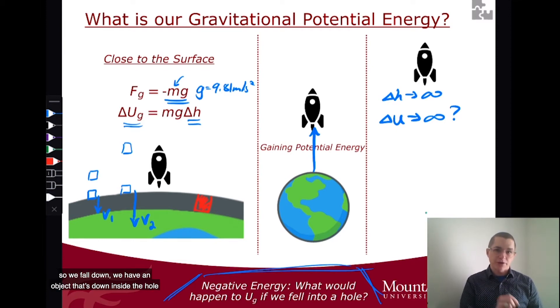if our delta h is negative, so we fall down, we have an object that's down inside the hole, it would have negative potential energy compared to our reference point, which means that it would take energy to climb out. So that's all that negative energy means.